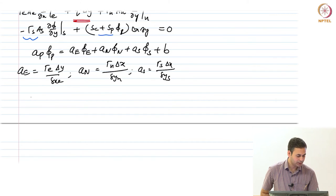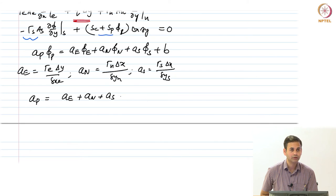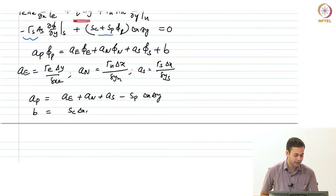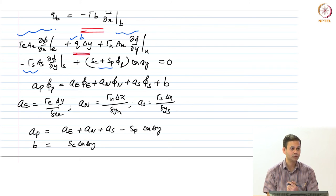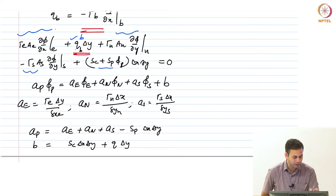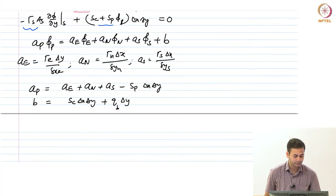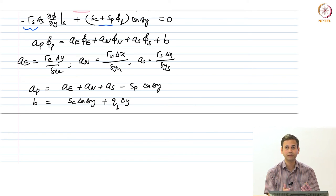A_P equals A_east plus A_north plus A_south minus S_P delta x delta y. B equals SC delta x delta y plus Q_B times delta y. If source is 0, A_P is just the sum of A_east, A_north, and A_south — Scarborough is satisfied in equality. If you have all Neumann boundary conditions, you will never satisfy Scarborough in strict inequality.